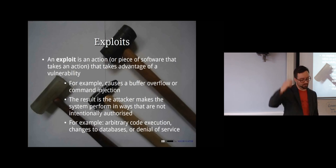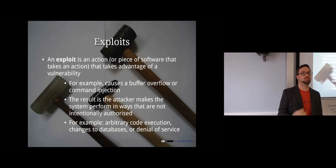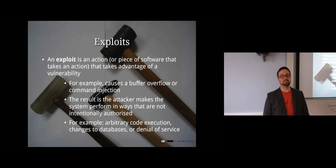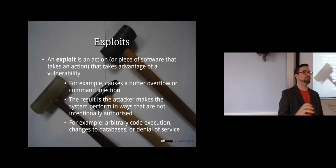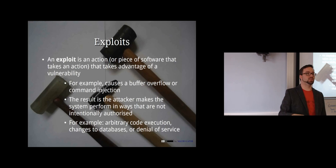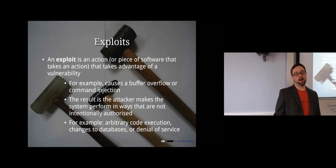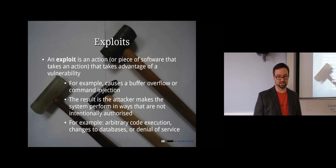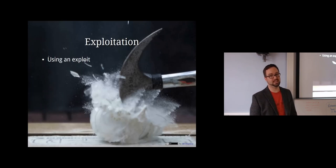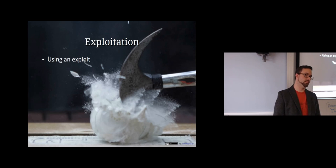There are other kinds of vulnerabilities too. Maybe you just have the ability to write into a database, or maybe you can perform a denial of service attack — where a mistake causes the machine to crash, so sending something to that computer takes it offline. That can still be serious: if you're Amazon and your servers go offline, you're losing a lot of money. But arbitrary code execution is a lot worse.